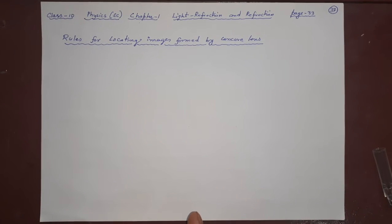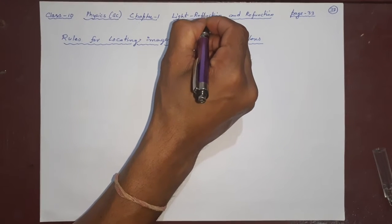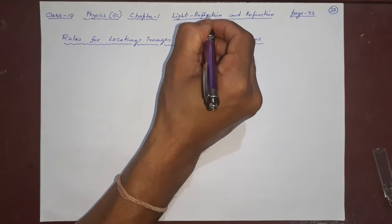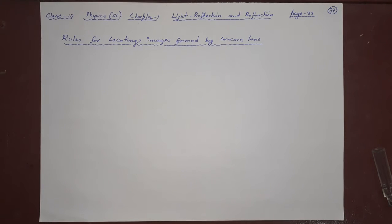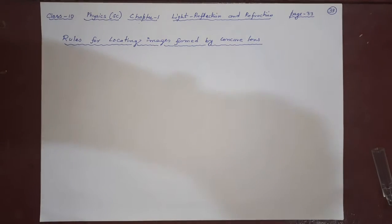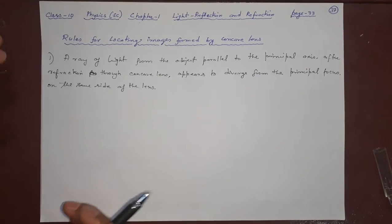Welcome back to the SD Online Classes. You are watching Class 10 Physics, Chapter 1: Light Reflection and Refraction. Page number 33 in your textbook. The topic we are doing today is rules for locating images formed by a concave lens.